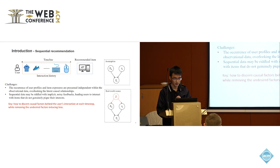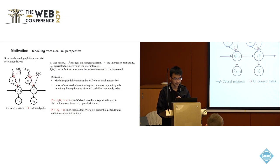Moreover, in the sequential data, especially when it is spanning over a long time period, it may be full with a lot of potential noisy feedbacks, which may misguide the user to interact with items that do not match their real interest. So, to tackle this challenge, our key is to discern the true causal factors behind the user interaction at each time step, while removing the undesired factors, including the bias information.